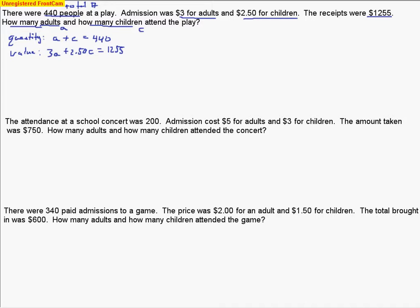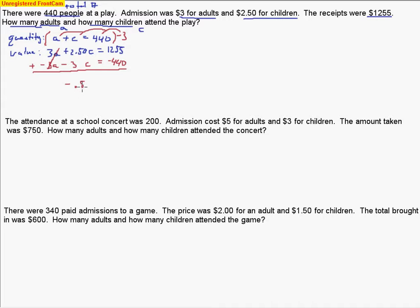Now we've got our two equations and we can solve. The best way is to try to cancel out the variable that requires multiplying fewer numbers. 2.5 is smaller but has two digits, so it's easier to multiply by just the 3. In this case I'm going to multiply by negative 3, and that will cancel out my A term. So now I have negative 3A minus 3C equals negative $440. Adding the two equations together, the A's will cancel out, and when I do the subtraction I'm left with negative 0.5 — think about taking $3 from $2.50, there's 50 cents left over.